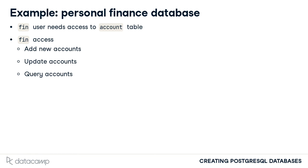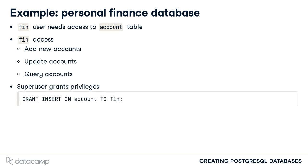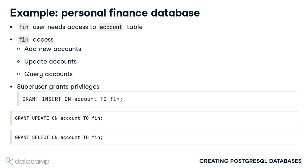The following commands, run as a super user, would grant these privileges: the ability for the FIN user to INSERT records into the account table, the ability for the FIN user to UPDATE records in the account table, and finally, the ability for the FIN user to SELECT records from the account table. After executing these three commands, FIN would have the limited set of privileges that we want to enable for this table.